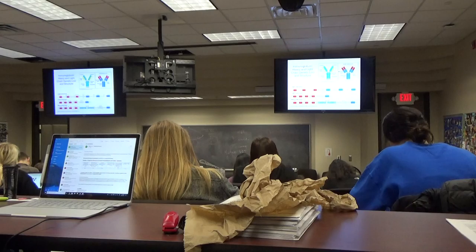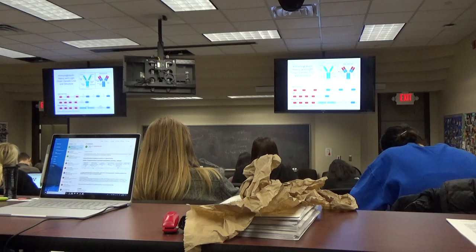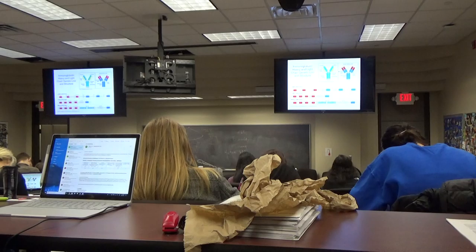Lambda has about 30 Vs and four Js that can combine. Kappa has about 38 V gene segments that can combine with up to 5 J gene segments.